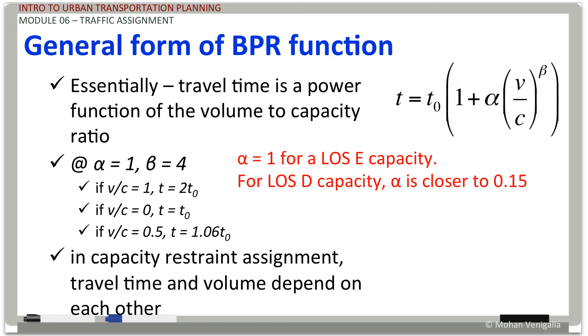Let's take a further look at this BPR function. If you put that in the previous form where T equals T sub 0 times 1 plus alpha times v over c to the power beta, if you put in the alpha place 0.15 and in the beta place 4, that is your BPR function. But this is a generic form of BPR function.